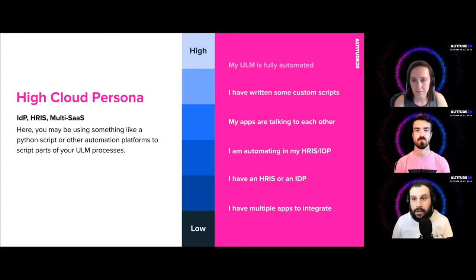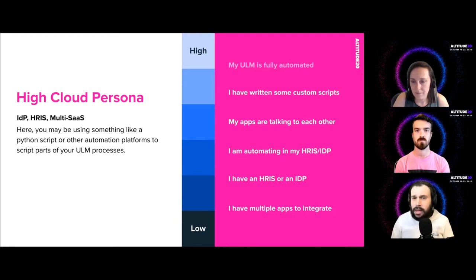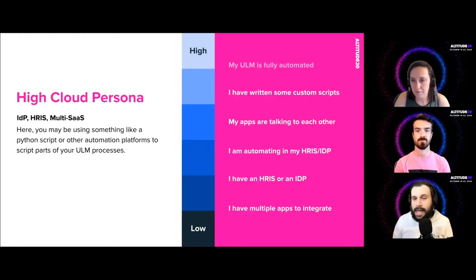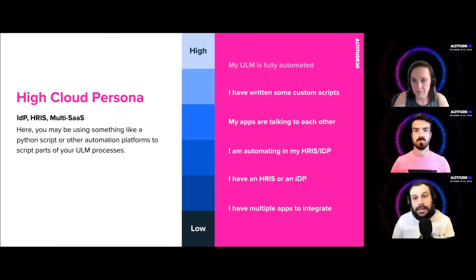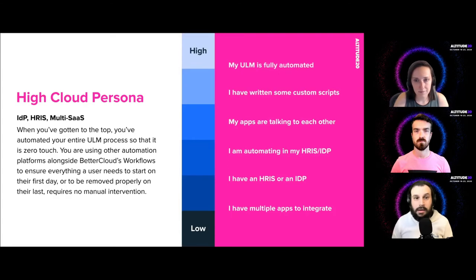As you continue up the scale, you may have custom scripts. As part of onboarding you might use Python scripts; as part of offboarding, PowerShell if you're a Microsoft 365 client. But scripts are still hard-coded and need to be maintained — if a script hasn't been edited in a year, onboarding and offboarding may not be happening as it's supposed to. BetterCloud's highest tier includes API access, letting you call PowerShell scripts from BetterCloud. This brings us to the highest tier: completely automated, zero-touch user lifecycle management.